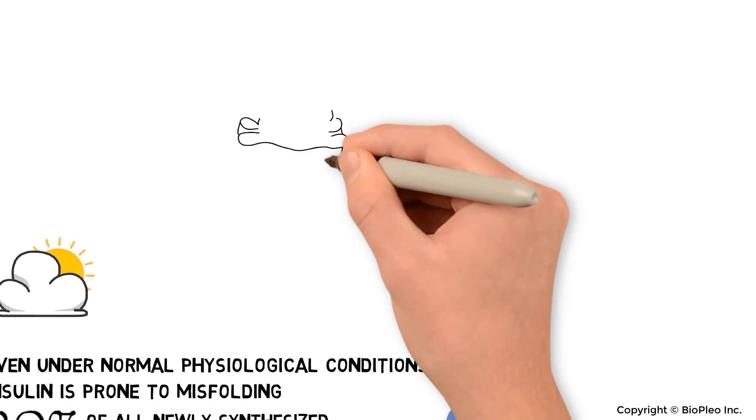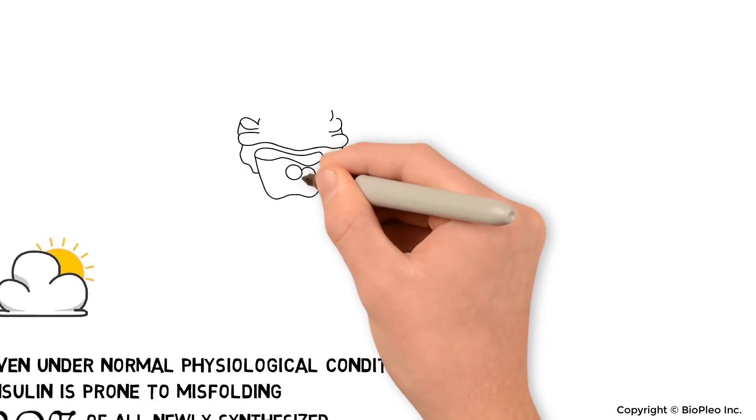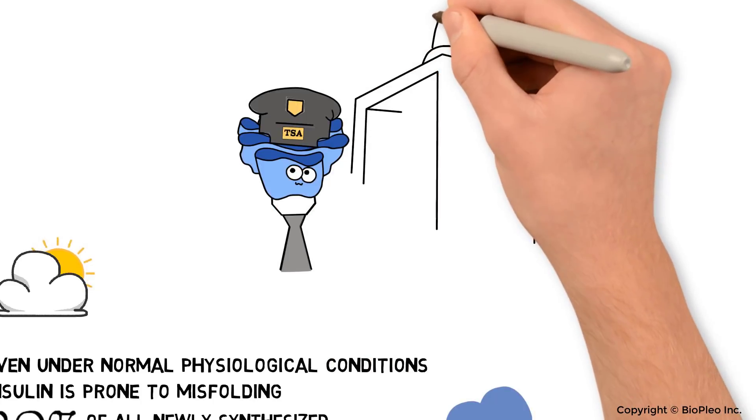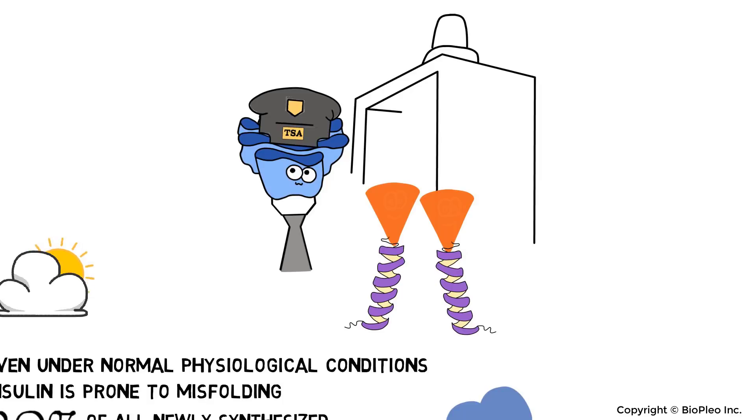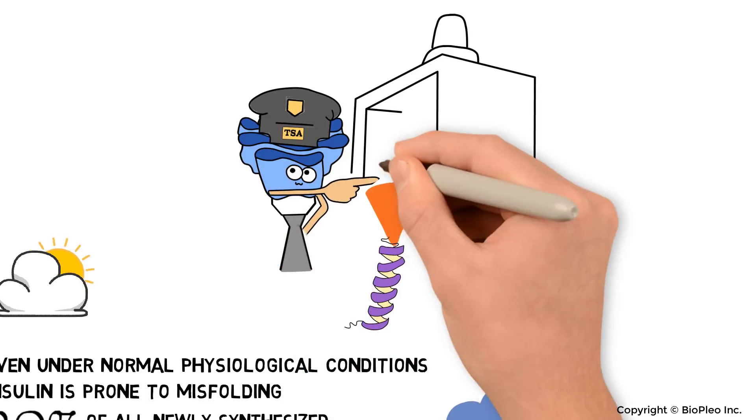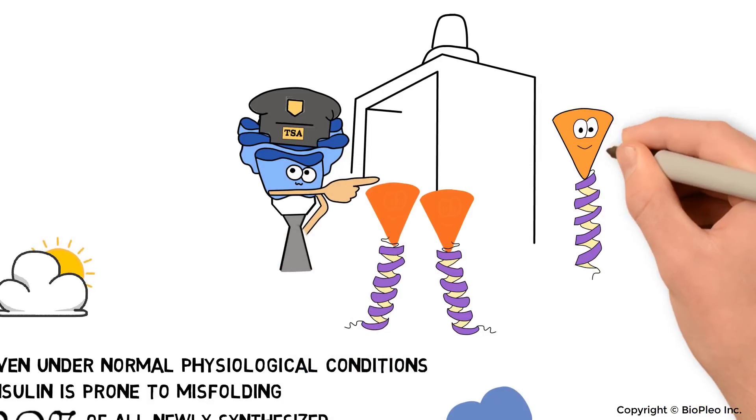In addition to helping newly made insulin fold correctly, the ER also serves as a quality control center, kind of like a TSA officer at the airport. If newly made insulin is in good shape, the ER allows it to pass through the gate and eventually reach its destination.